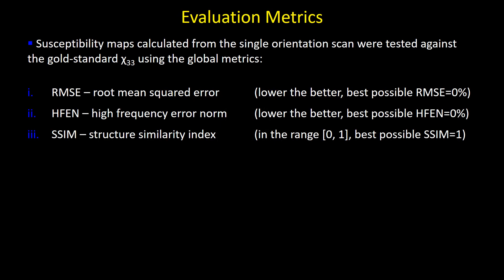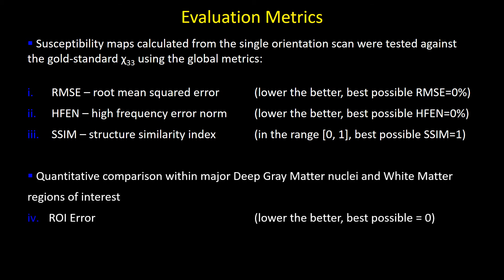The evaluated reconstructions — susceptibility maps calculated from single-orientation data — were tested against the gold standard Chi-3-3 using the following metrics: root mean squared error (RMSE), high-frequency error norm (HFEN), and structural similarity index (SSIM). We also looked at quantitative accuracy in major deep gray matter nuclei and white matter regions of interest.